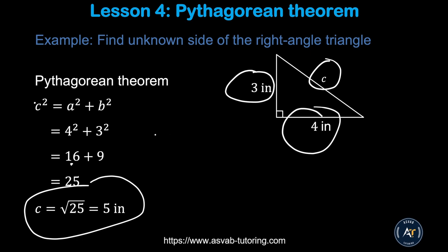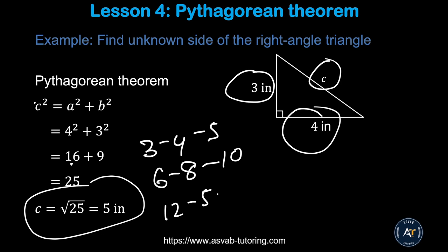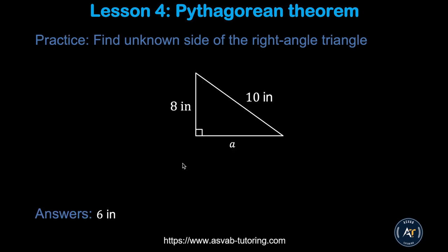You should know common Pythagorean triples: the 3-4-5 triangle, the 6-8-10 triangle, and the 5-12-13 triangle. If you know any two sides from one of those, you can easily find the third. Pause the video and try the final practice problem by yourself. If you understand this concept, you know everything you need for the basic geometry section of the Officer Candidate Test.